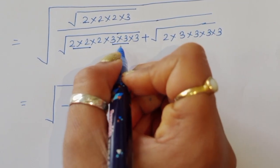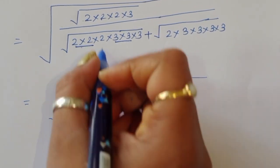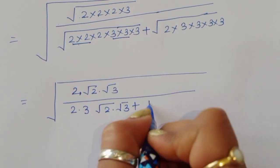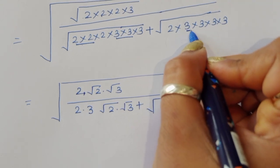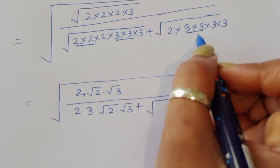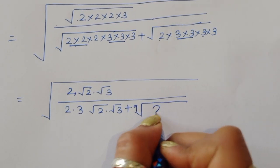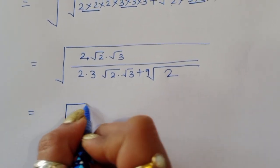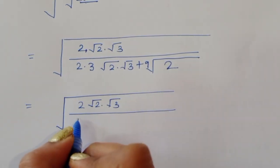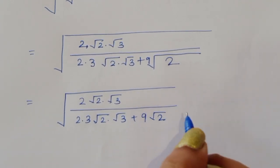For the 216 term, 3 times 3 is 9 and square root of 9 is 3, so we get 2 times 3 times square root of 2 times square root of 3. For the 162 term, 3 times 3 times 3 times 3 is 81, and square root of 81 is 9. So we can take 9 outside with the remaining term square root of 2. This gives us: 2 square root of 2 times square root of 3, divided by 2 times 3 times square root of 2 times square root of 3 plus 9 square root of 2.